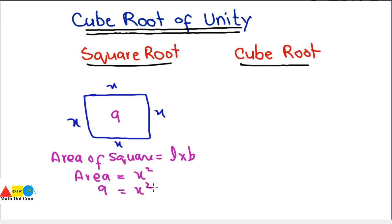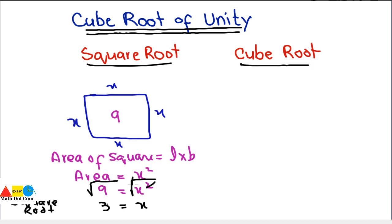We are unable to directly find the value of x from x squared equals 9. Here comes the concept of square root: take the square root on both sides. The square root cancels with the squared, and the square root of 9 is 3, because 3 multiplied by itself gives 9. So square root is basically how many times one number should be multiplied by itself to get the given number.